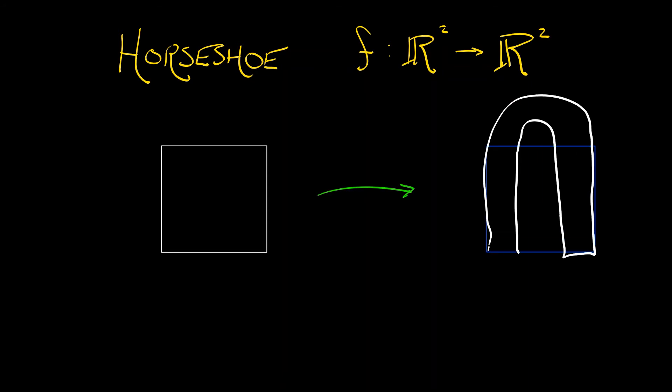Given this horseshoe map from the plane to the plane that takes the square, squeezes it, stretches it, bends it around into a horseshoe shape, and lays it down on top. The first fact, very important...